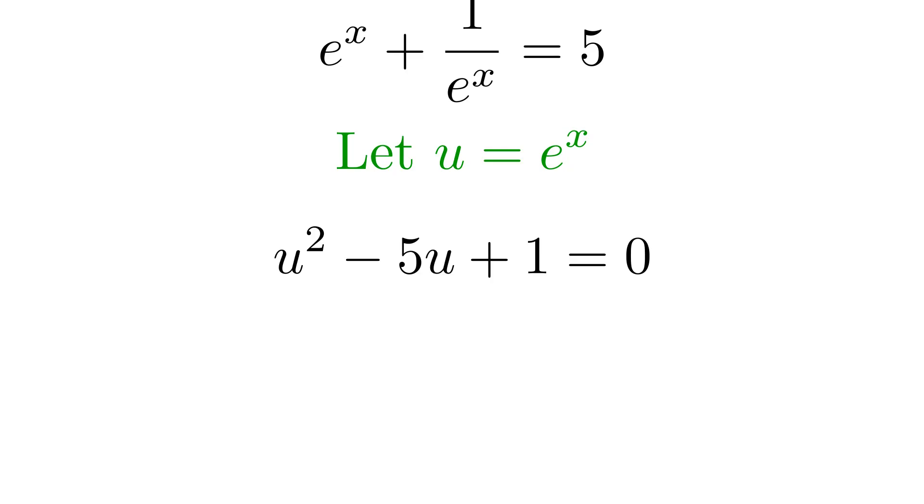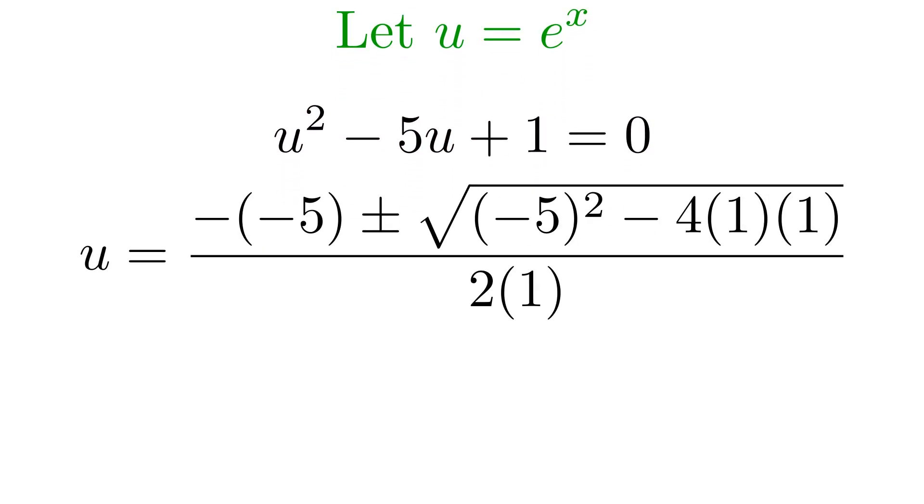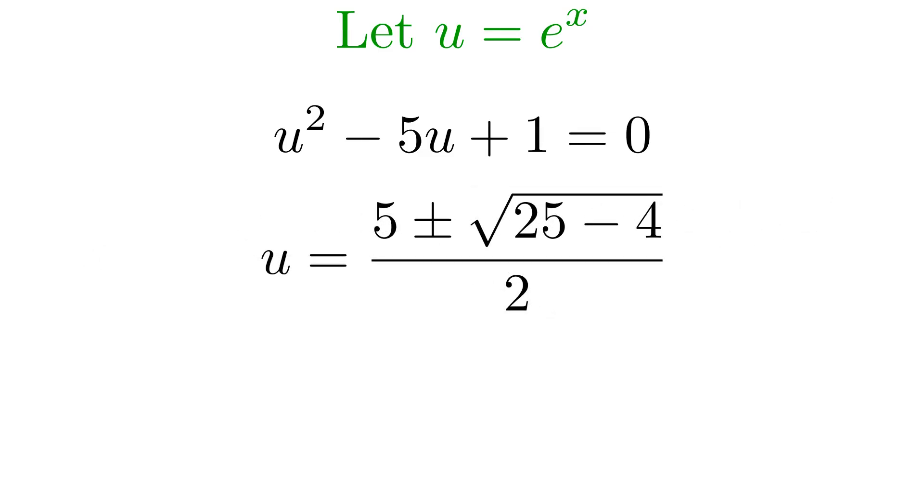Now, this particular quadratic doesn't factor in a clean way, but that's what the quadratic formula is for. It's our reliable tool for any quadratic equation. For our equation, a is 1, b is minus 5, and c is 1. Substituting these into the quadratic formula gives us this. Working through the arithmetic, we get 5 plus or minus the square root of 21, all divided by 2. So u can take on two values, and they both involve the square root of 21.